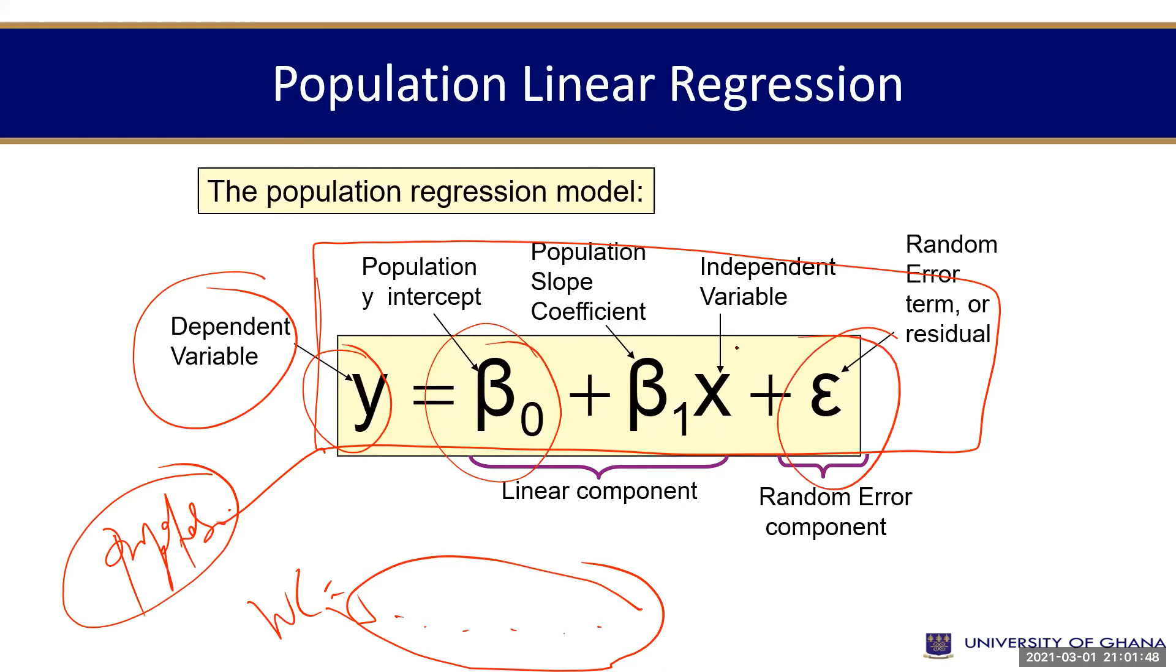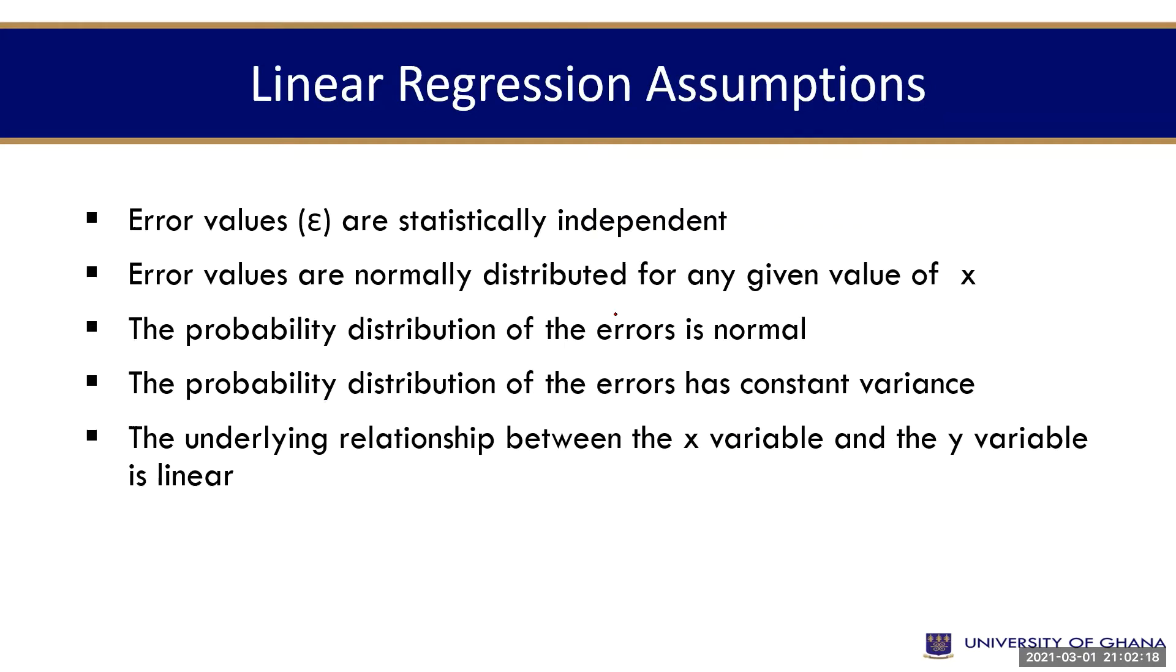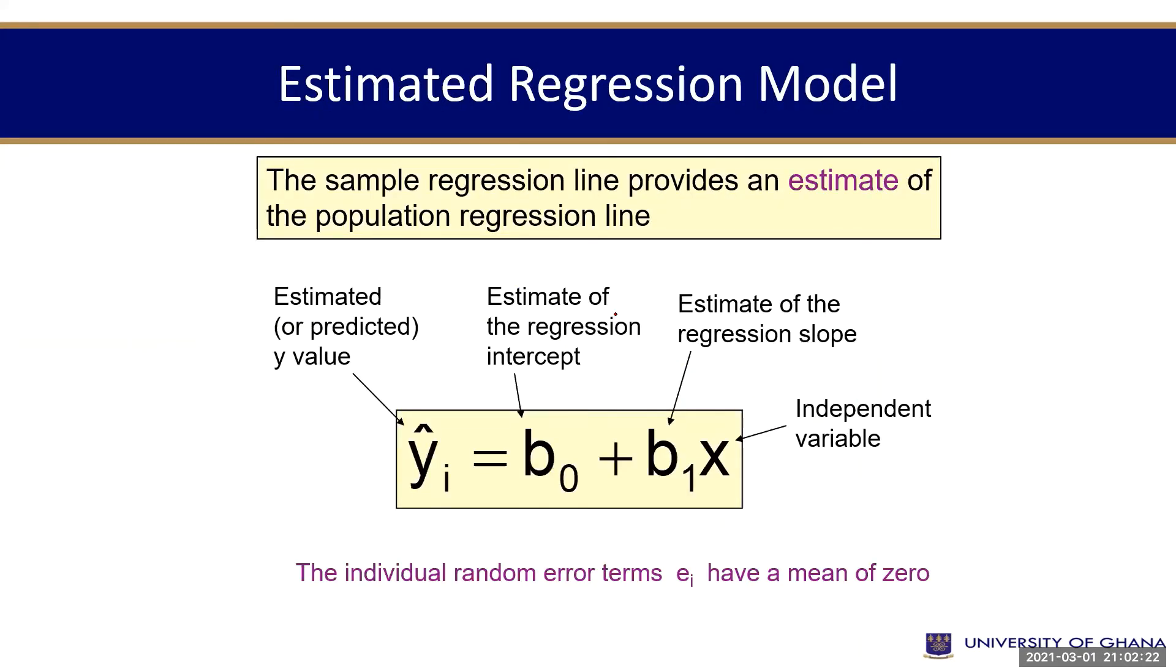Then, the error term actually is telling us that other factors may be explaining the differences in working capital behavior. Other factors. But we have only selected just these factors, which is the X factors. So, this will help us to reduce the noise or the errors in terms of the data that we collect to estimate the profitability. Please note that this is what we'll be using. Estimated regression model. Because we are using sample, we need to use the estimated regression model. The first one is the population regression.